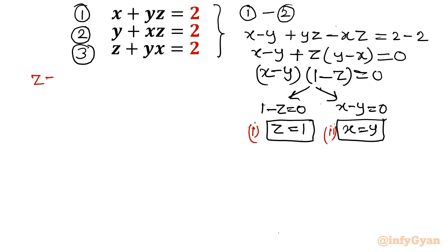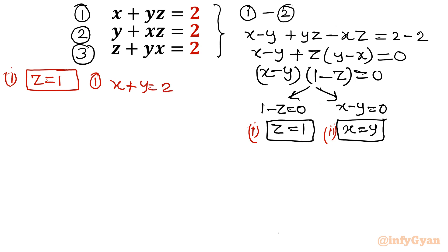Let's put z equal to 1 in the system of equations. Equation 1 becomes x plus y equal to 2. Equation 2 is y plus x equal to 2 — same as equation 1. Equation 3 becomes z plus yx equal to 2, so with z equal to 1: yx equal to 2 minus 1, therefore xy equal to 1.